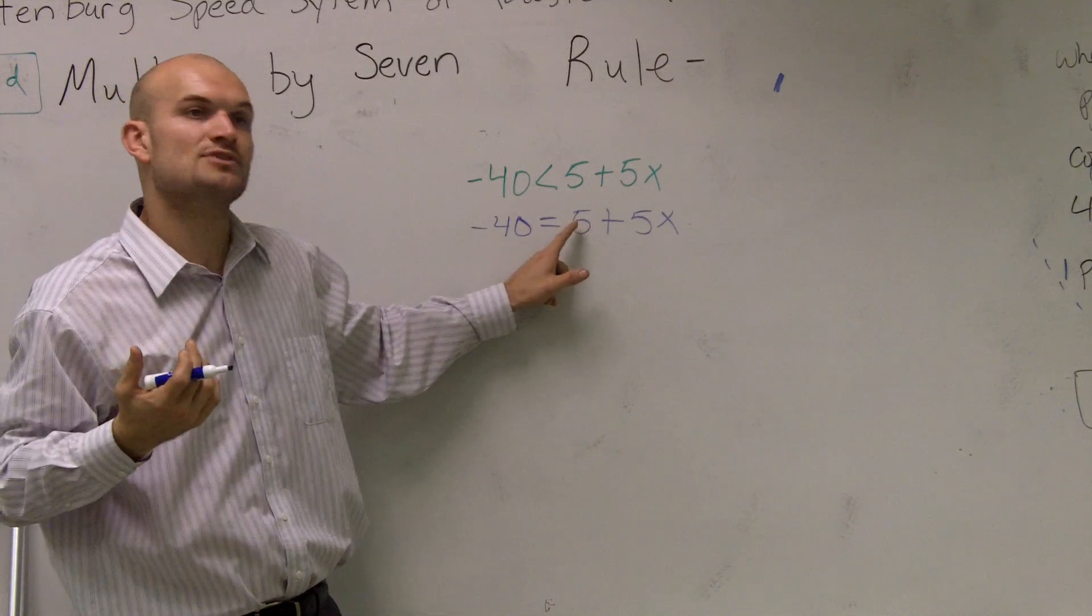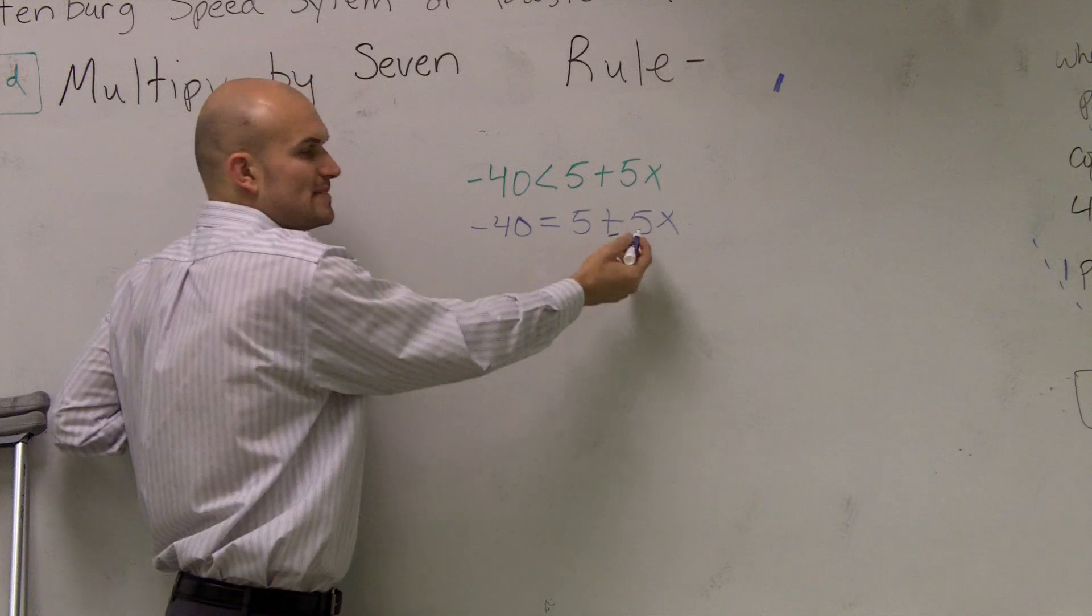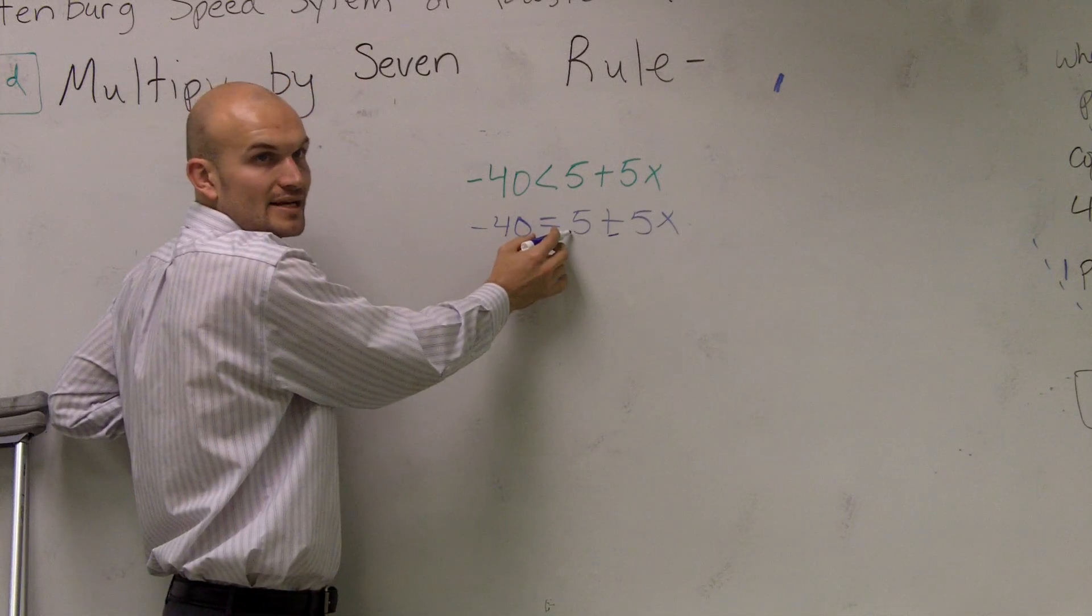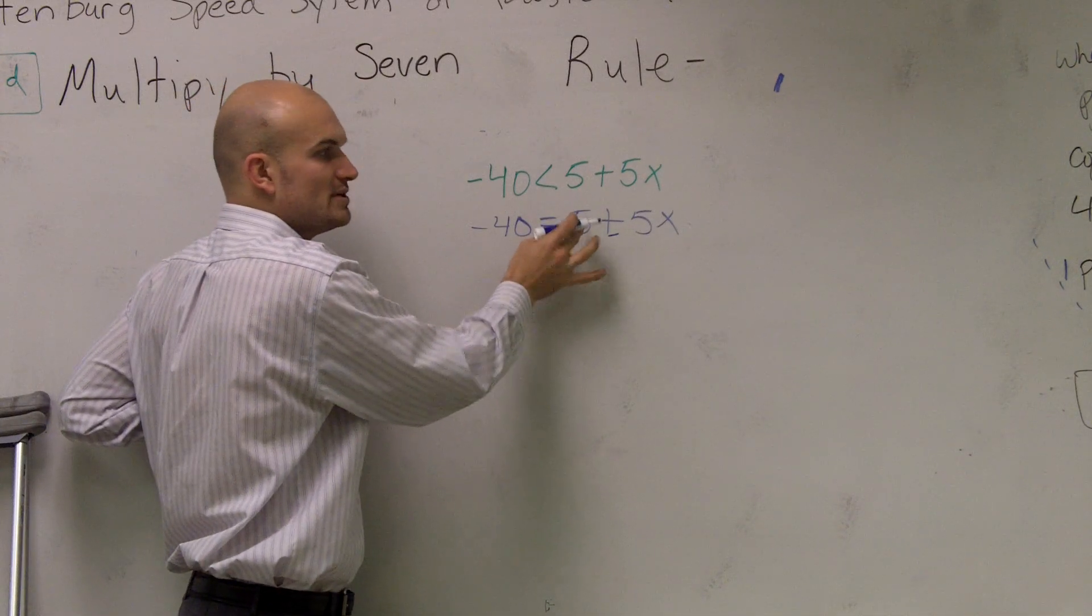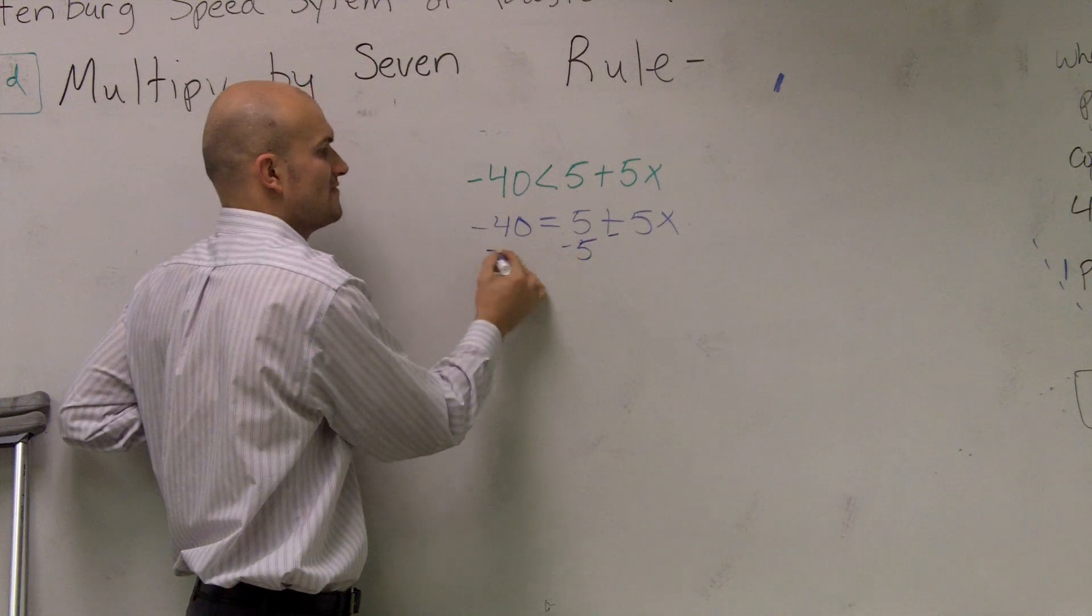And why do you know it's being added? Well, it's being added not because of this plus sign, but it's being added because that 5 is a positive. So, therefore, to undo addition of this 5, I need to subtract 5 on both sides.